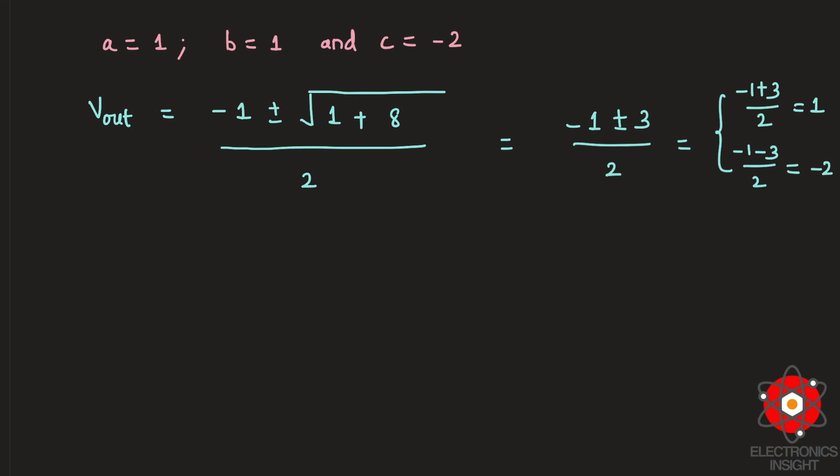And the other one will be (-1 - 3) / 2 which is -4/2 = -2. Now the output voltage cannot be negative for an NMOS transistor. Therefore, we choose the positive value here for the output voltage where Vout is going to be 1 volt.